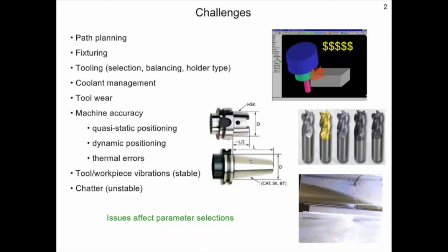We must also ensure that the machine is sufficiently accurate to make the part in question. Contributors include the quasi-static positioning errors, dynamic positioning errors, and thermal errors, which depend on the thermal state of the machine. We also have to consider the tool and workpiece vibrations under stable cutting conditions, and then finally chatter or unstable cutting conditions. Each of these issues affect the parameter selections.